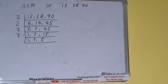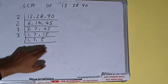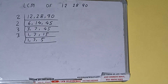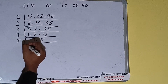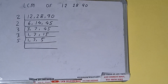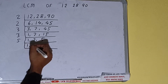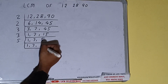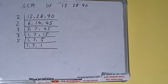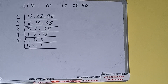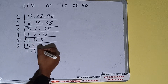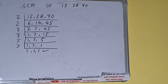So we'll check with the next lowest prime number, that is 5. The last number is divisible by 5, so we'll divide, and it becomes 1. We copy down the others. Now none of the numbers are divisible by 5, so we check the next prime, that is 7. The second number is divisible by 7, so we divide, and we end up with 1, 1, 1. Once we get all 1s, we stop.